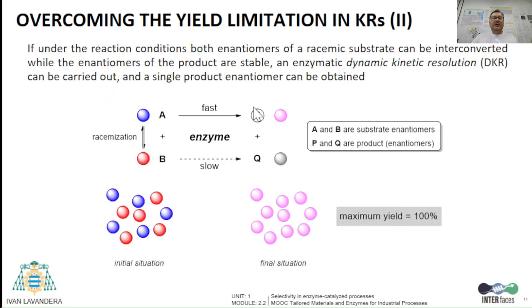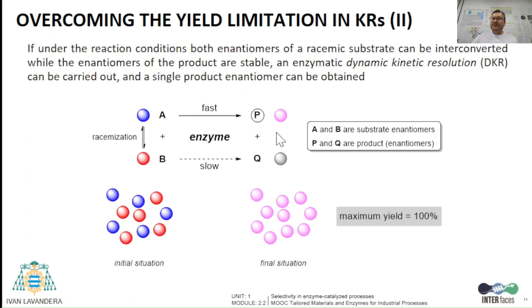But can we get quantitatively an enantiopure single product starting from a racemate? The answer is yes. One way for achieving this is coupling a kinetic resolution process with the racemization of the slow-reacting enantiomer, converting it into the other substrate enantiomer, which can ideally afford the final product at 100%. In the example, a slow-reacting substrate enantiomer B is transformed into the fastest one, A, which after reaction with the biocatalyst renders enantiomer product P. These systems are called dynamic kinetic resolutions.